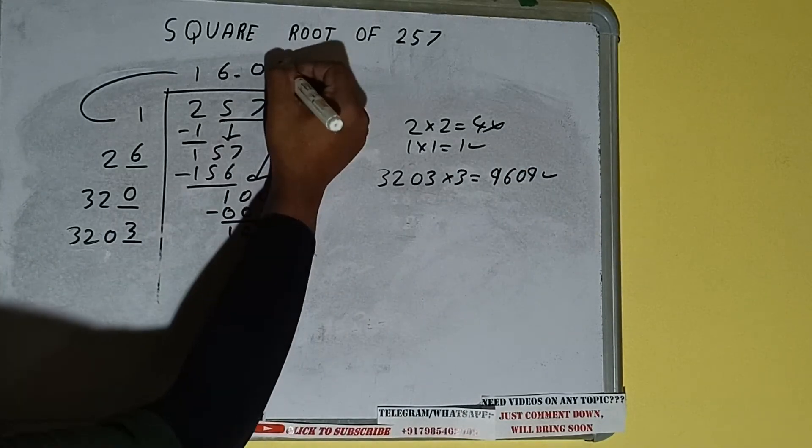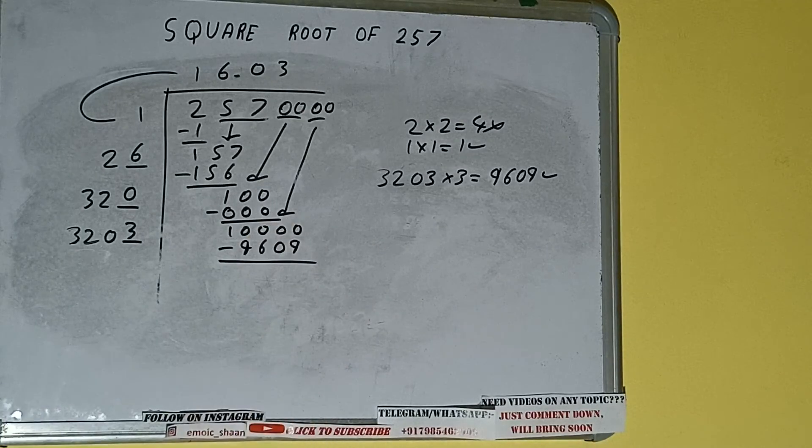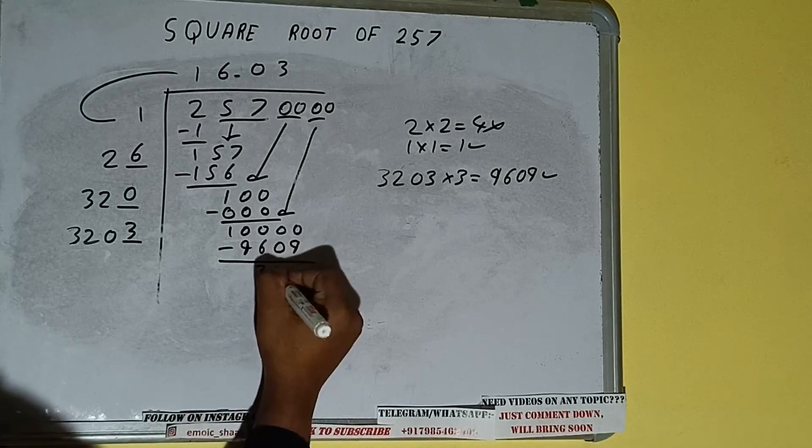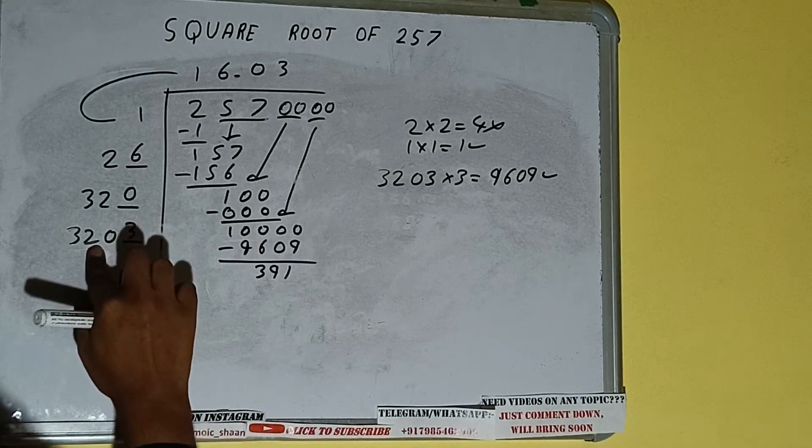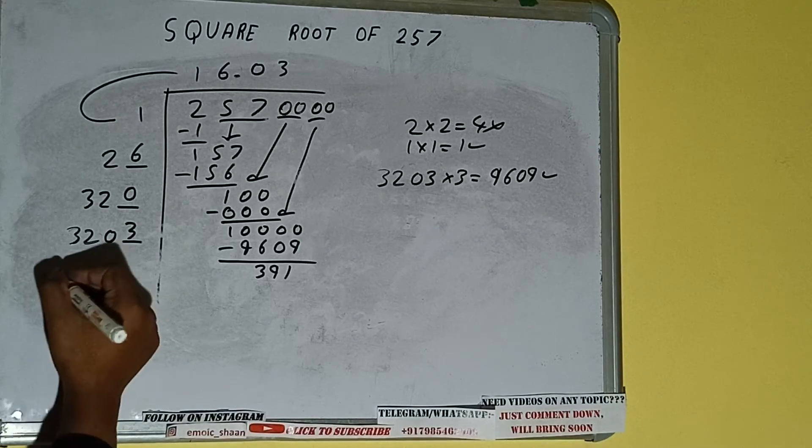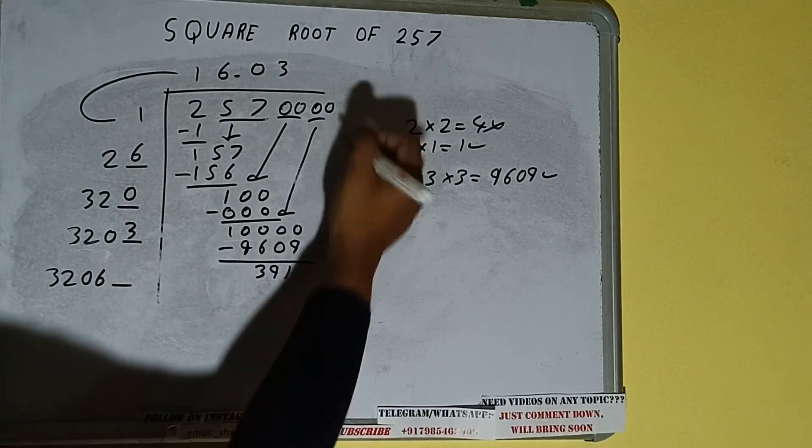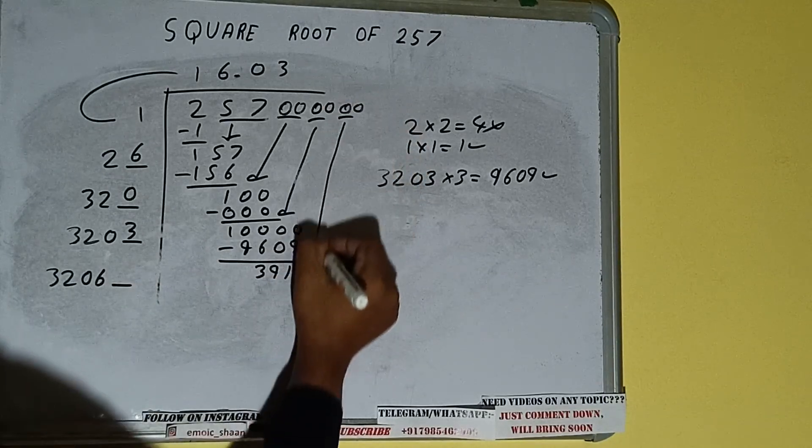So 3 here and 3 here, 9609 subtract and we'll be getting 3910. Now 3203 into 3 we did, so add both. So 3203 plus 3 will be 3206, and one digit extra. And this number we need to make it big.